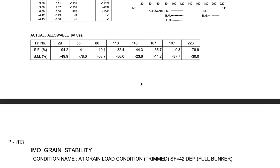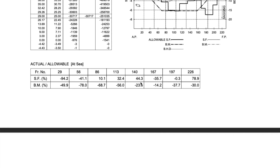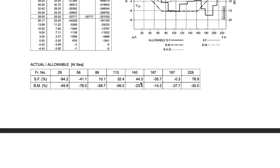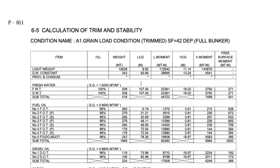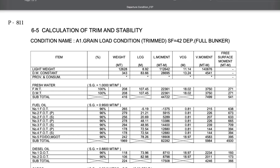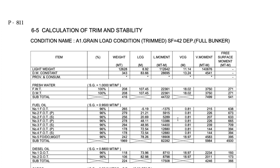This is how the departure condition looks like. I will not discuss the arrival condition separately as it follows the same format. Now let us quickly go back to the NCB form and start filling it up.